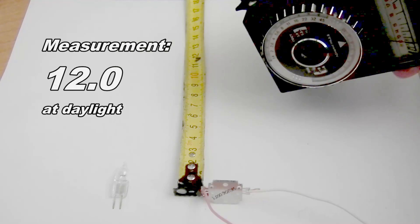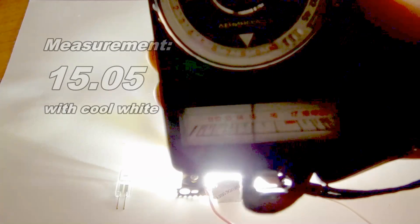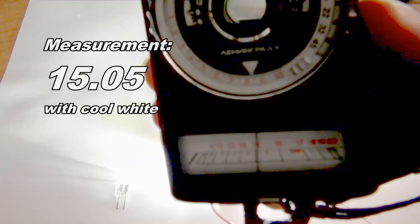The measurement was 12.0 units. I must note that I increased the gamma level on the video, so any increased brightness isn't from additional lighting, it's just increased gamma. Next, I measured the cool white diode. The measurement was 15.05 units.